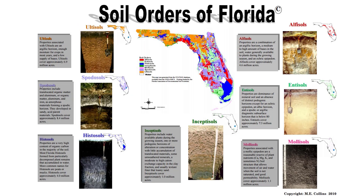In this figure, you can see that several soil orders make up Florida. Some are widespread like Spodosols, Entisols, and Ultisols, while others are localized like Histosols. Still others are found in pockets like Inceptisols and Mollisols.